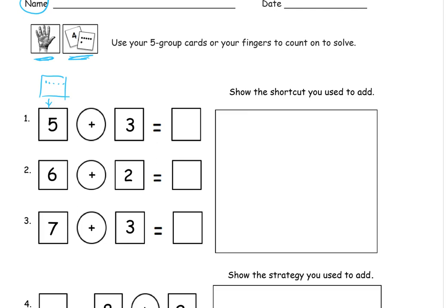And the back of this five group card for the three would have three on it. And you could just count all the dots. Eight. You could use your five group cards like that.